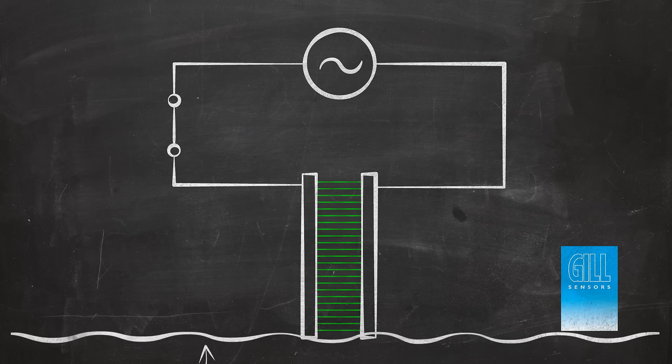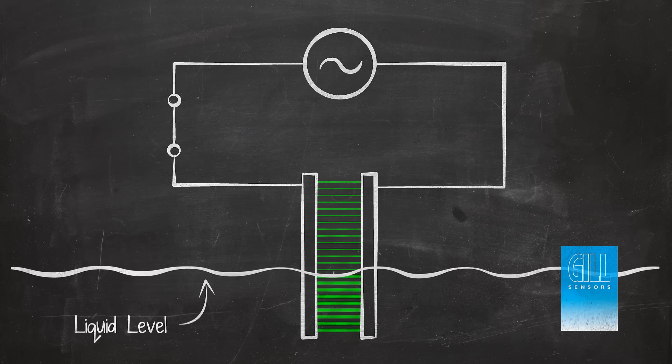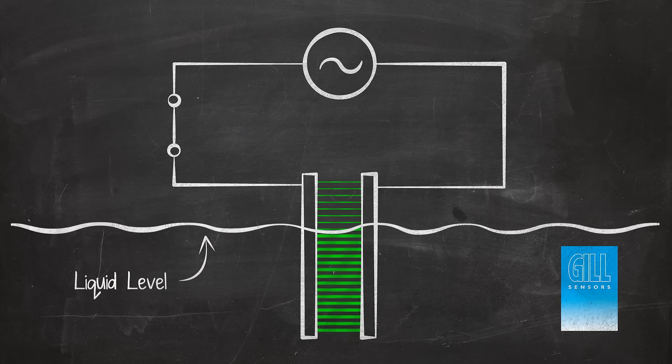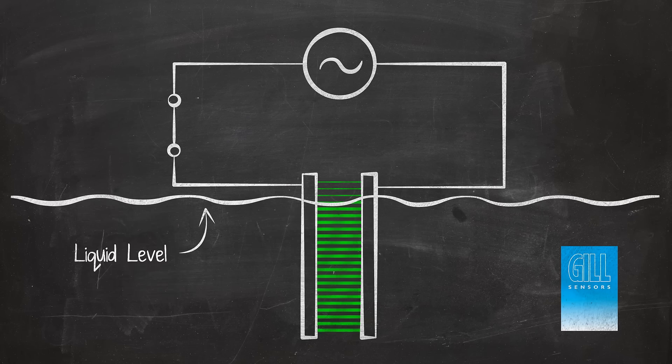As a dielectric liquid is introduced between the electrodes of the capacitor, the capacitance changes progressively and liquid level can be determined.